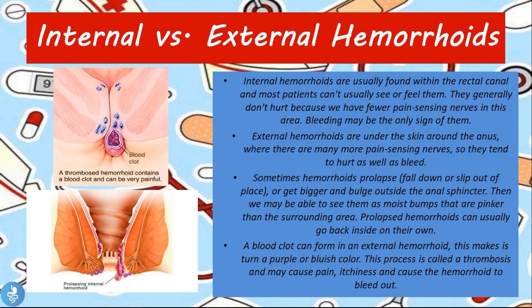To recap: internal hemorrhoids are found within the anorectal canal and most patients can't see or feel them because there are fewer pain-sensing nerves in this area. External hemorrhoids are much more painful because there are many more nerves around the anus. Sometimes internal hemorrhoids may prolapse — as seen in the picture below, an internal hemorrhoid has pushed through the anal canal onto the anal surface, appearing as a moist pinkish lump on the surface of the skin.